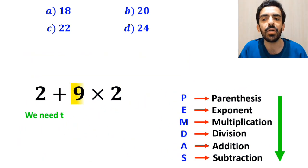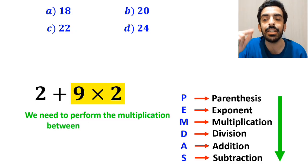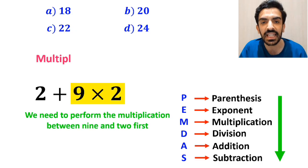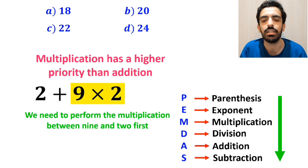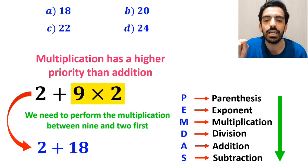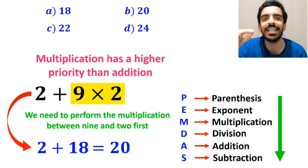Finally, we need to perform the multiplication between 9 and 2 first, because multiplication has a higher priority than addition. And this expression simplifies to 2 plus 18, which ultimately gives us the answer 20.